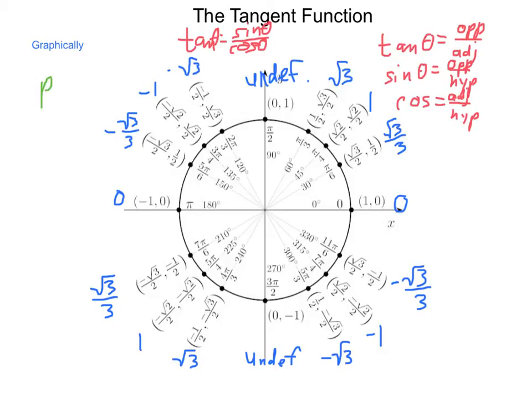Our period is going to be equal to the value of pi divided by b.